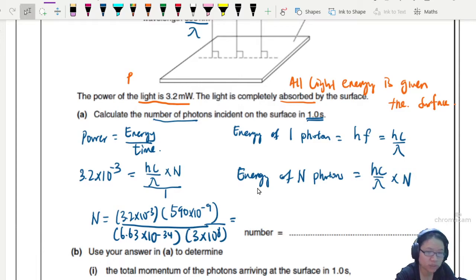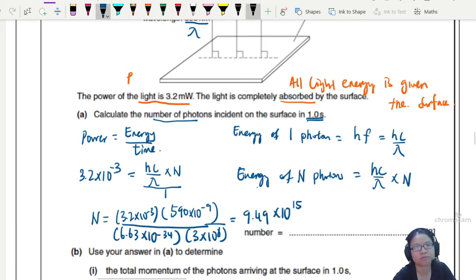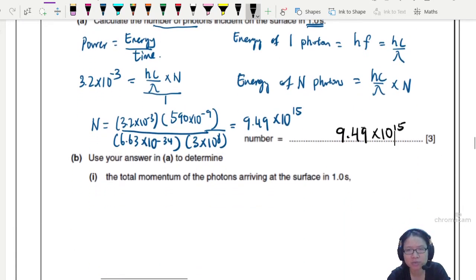3.2 e negative 3 times 590 e negative 9 divided by 6.63 times 10 to the power of negative 34 times speed of light 3 times 10 to the power of 8. I got myself the number 9.49 times 10 to the power of 15. Yes indeed, this number have to be very big. You're talking about many light particles bombarding the metal surface.